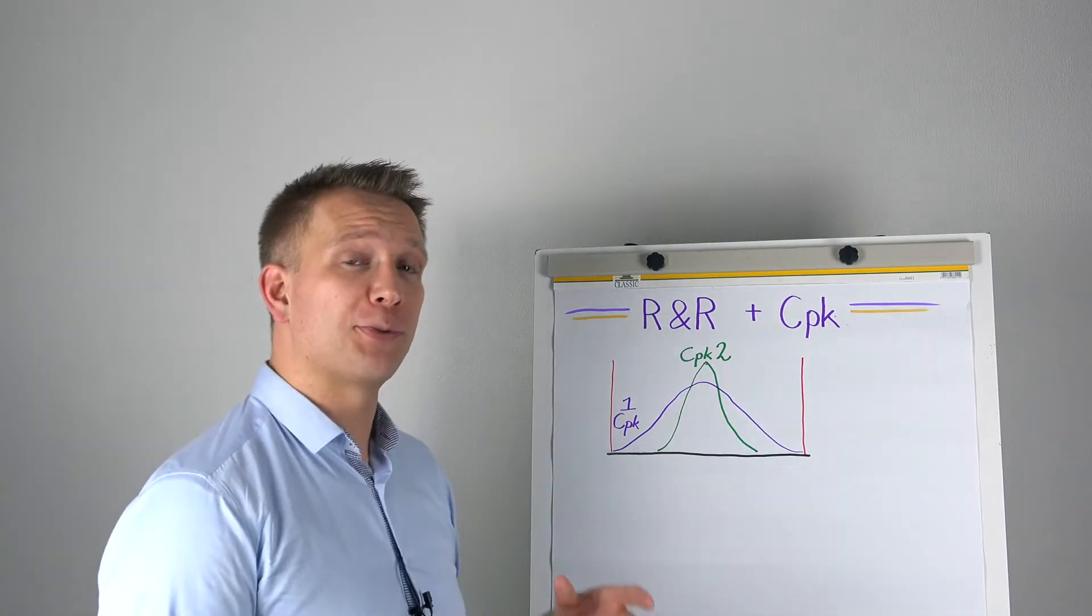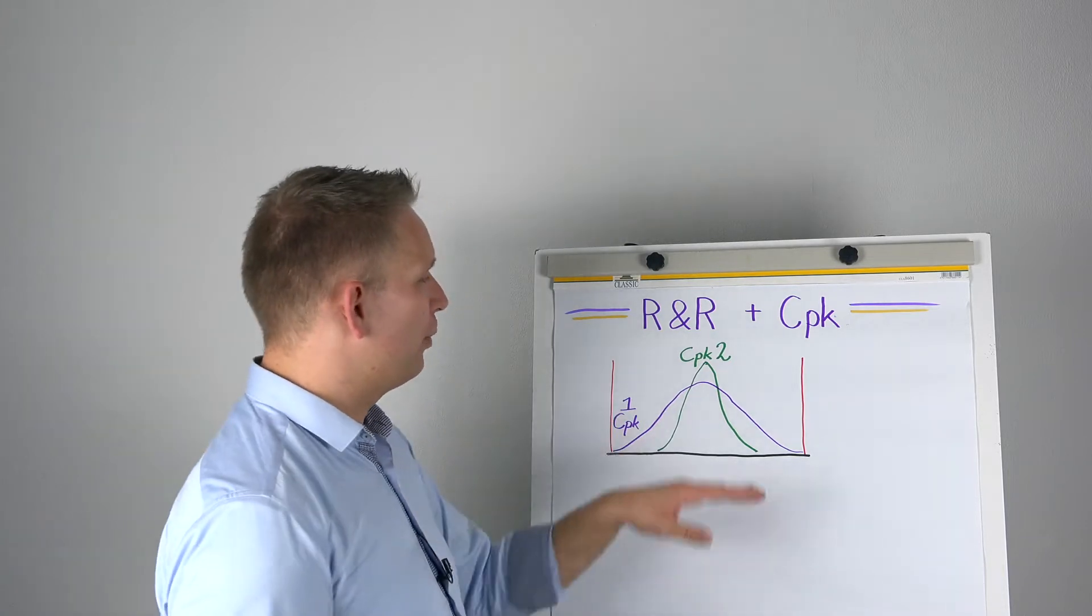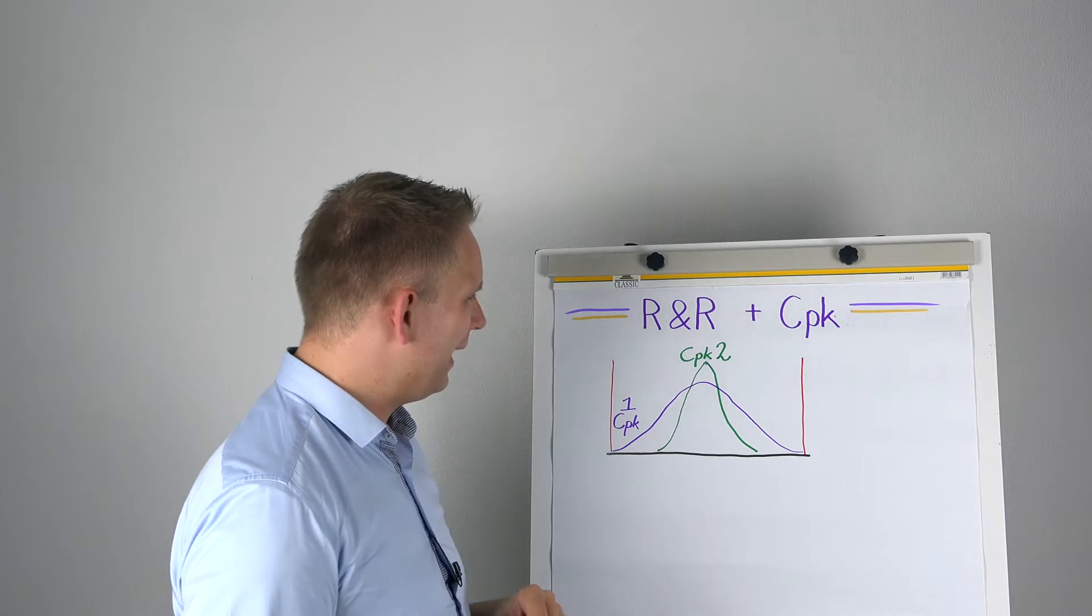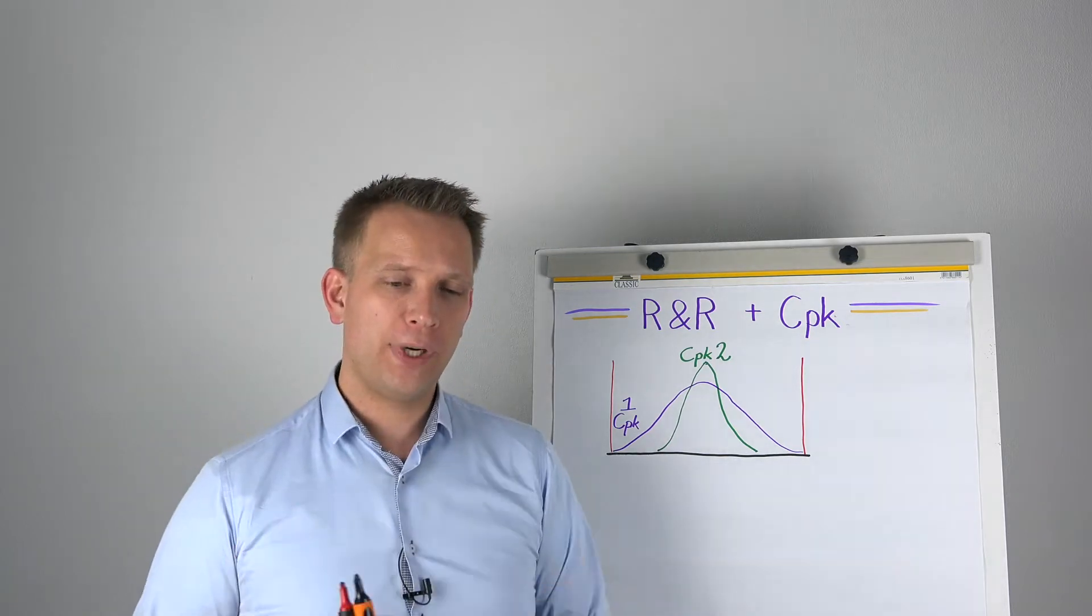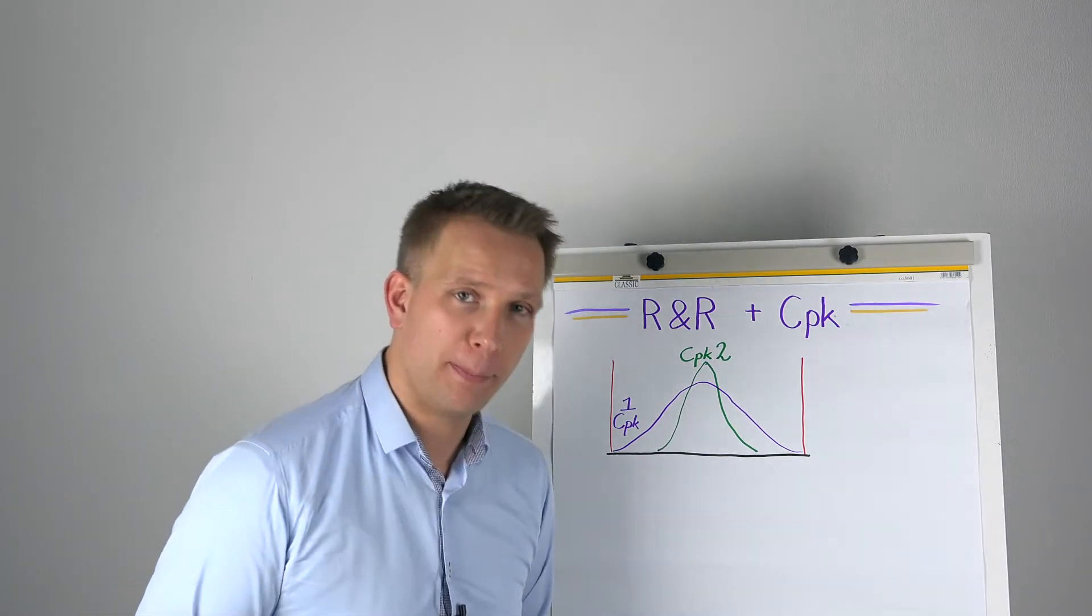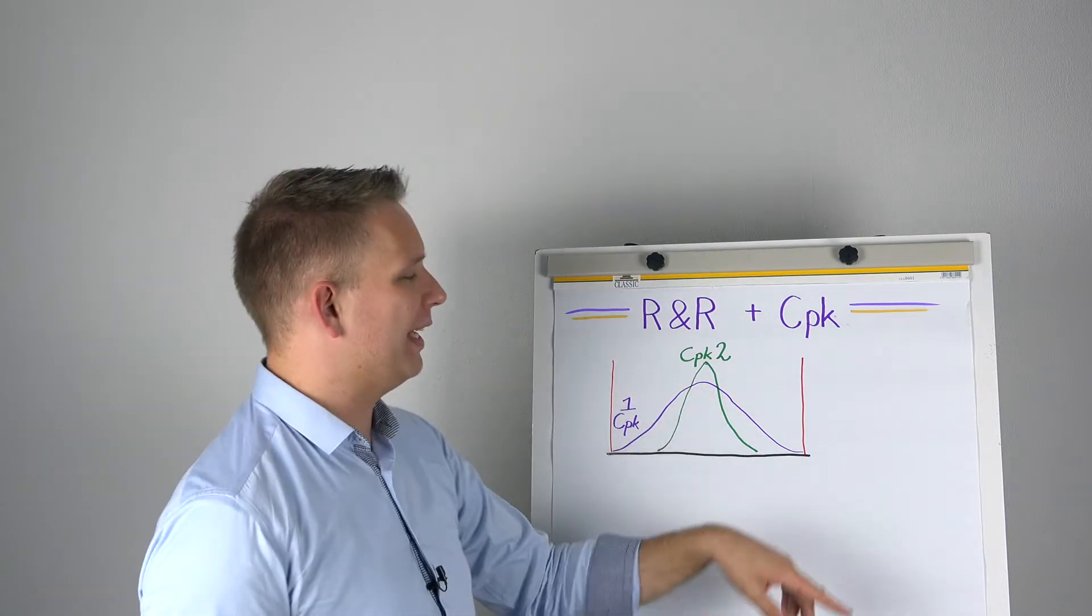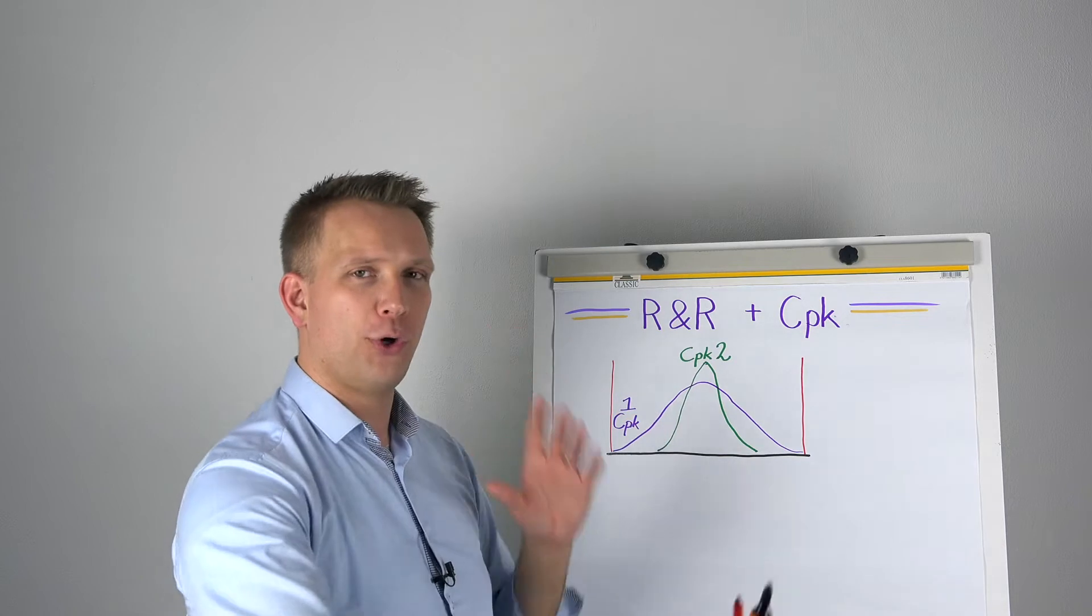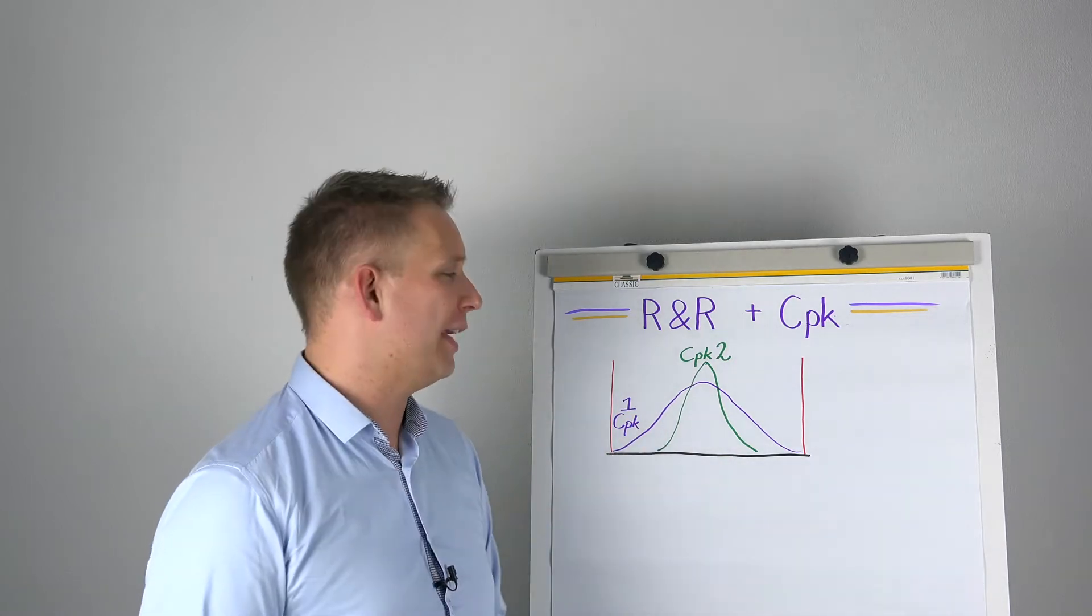So either internally or a customer, we put some specifications on our process. Now we have two lines making the same product. We have the purple and the green line and the purple line, it actually three standard deviations from the mean. So it's three that way, three that way.